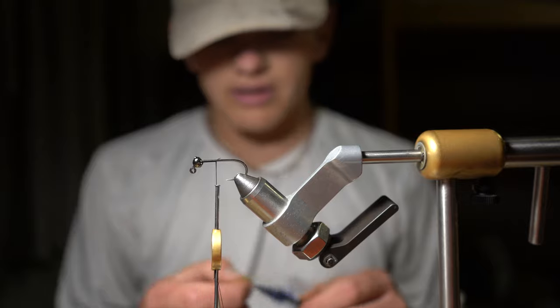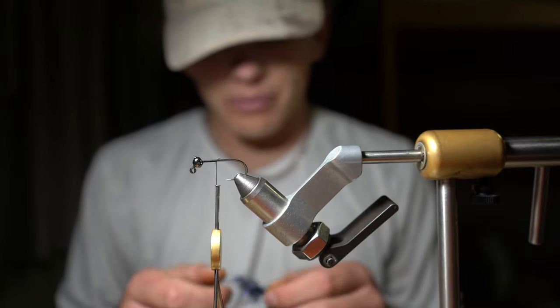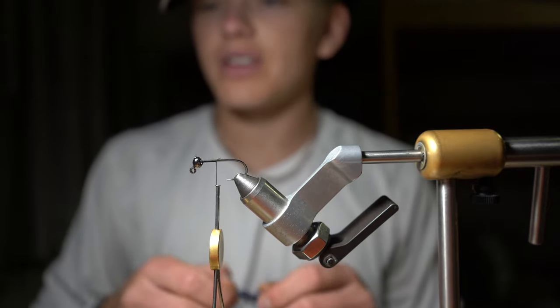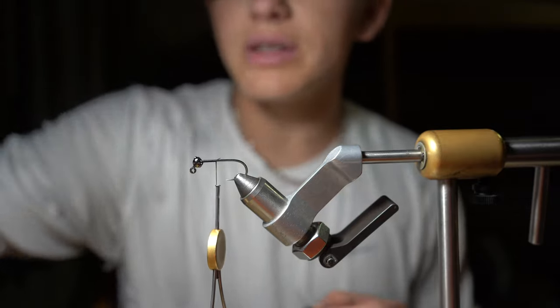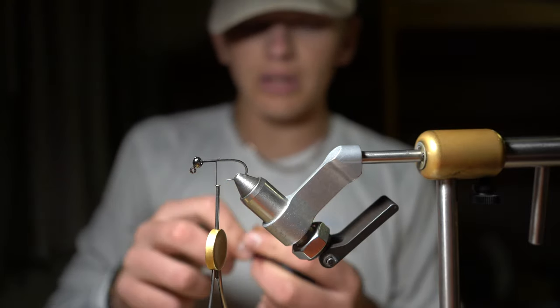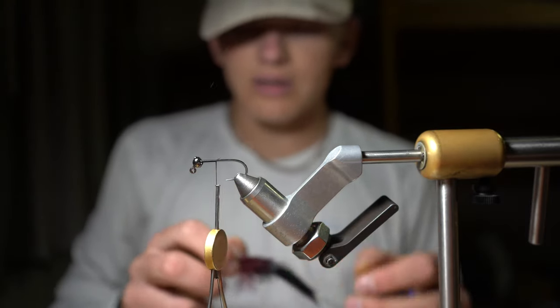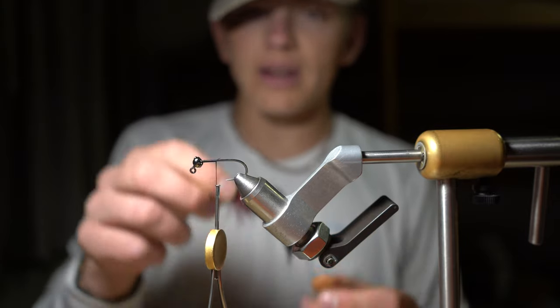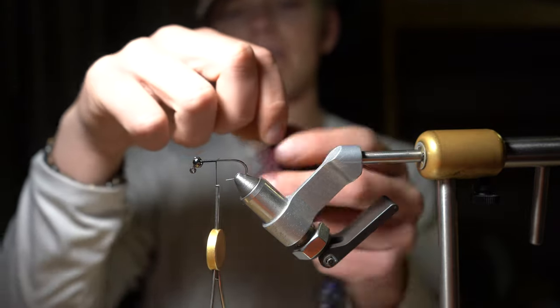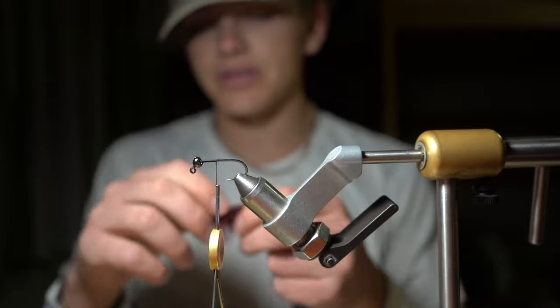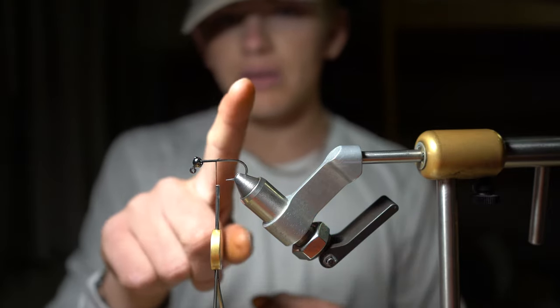Alright guys, you asked for a tying video on my Instagram story where I posted some of these flies. This is a size 8 black and wine jig streamer right here. It takes three materials other than the hook.